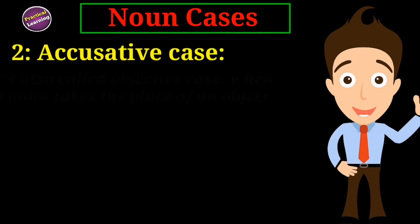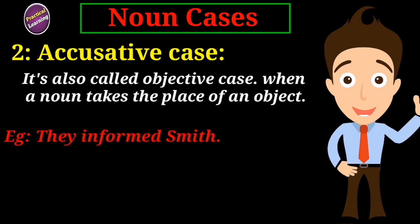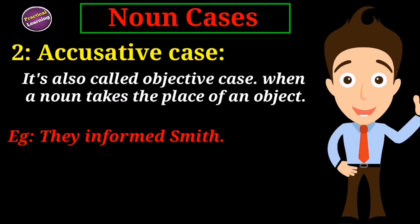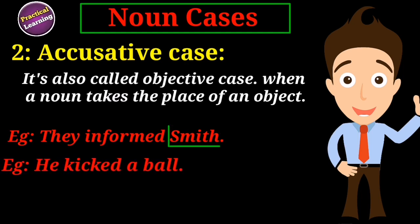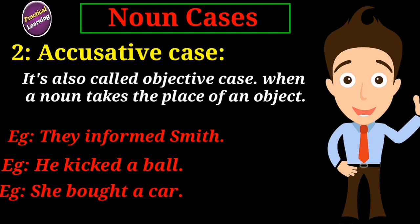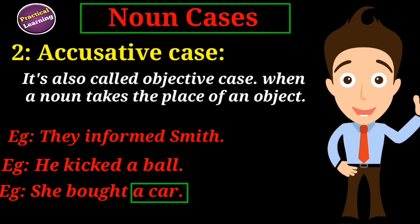Accusative case. When a noun takes the place of an object, it is called the accusative case. For example, 'They informed Smith.' Here, the noun Smith takes the place of an object, so it is the accusative case. Other examples include 'He kicked a ball' and 'She bought a car.' Ball and car are nouns that have taken the place of an object, so they are called the accusative case of a noun.